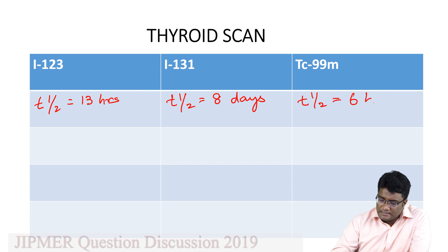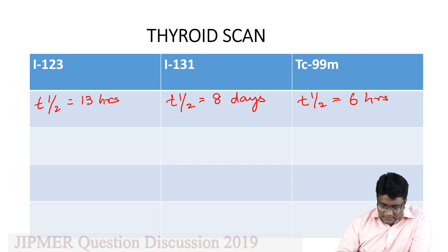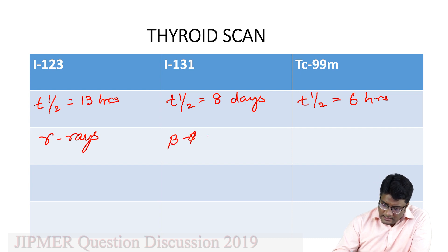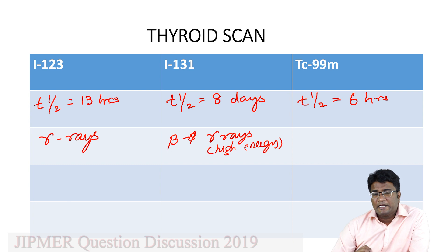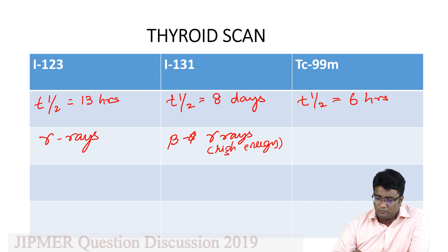Iodine 123 is a gamma emitter — it produces gamma rays. Iodine 131 produces high energy beta rays and gamma rays, and the gamma rays emitted by iodine 131 are of high energy. Technetium 99m produces gamma rays in the range of about 140–143 electron volts, which are of generally low energy.